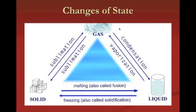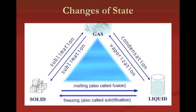The changes in state of matter: going from solid to liquid is called melting; liquid to gas is vaporization; gas back to liquid is condensation; and liquid to solid is freezing. One we might not be as familiar with is sublimation — that's when we go from a solid to a gas without going through the liquid state. A prime example is dry ice, which is solid carbon dioxide that heats up and changes straight from a solid into a gas.